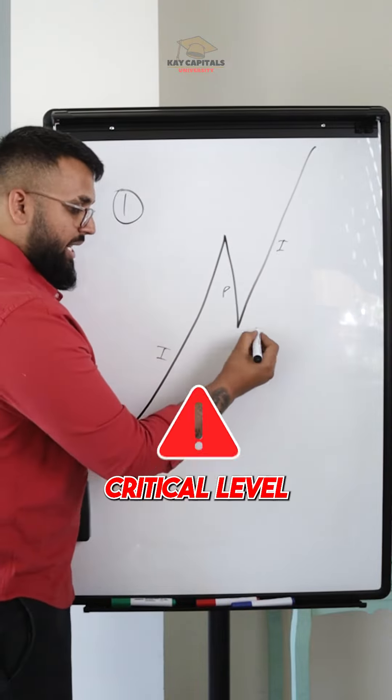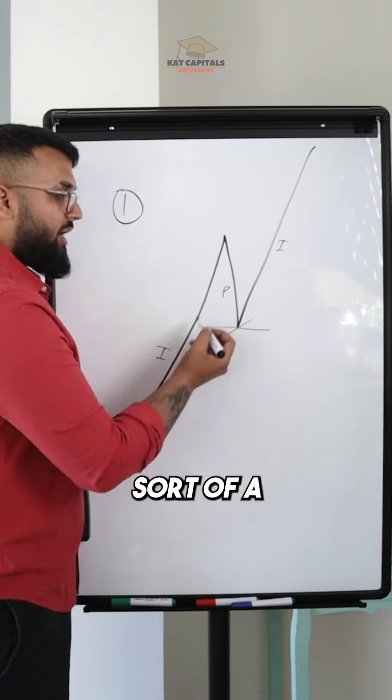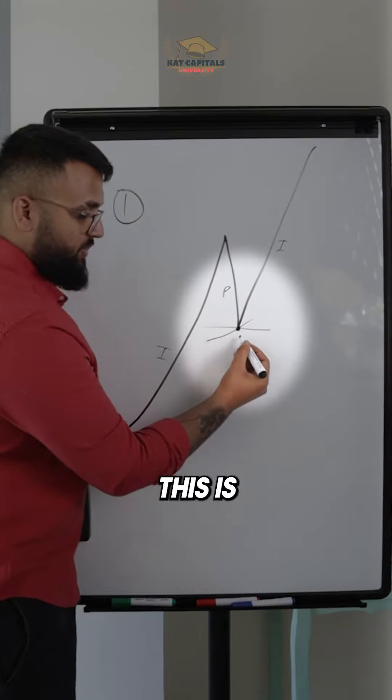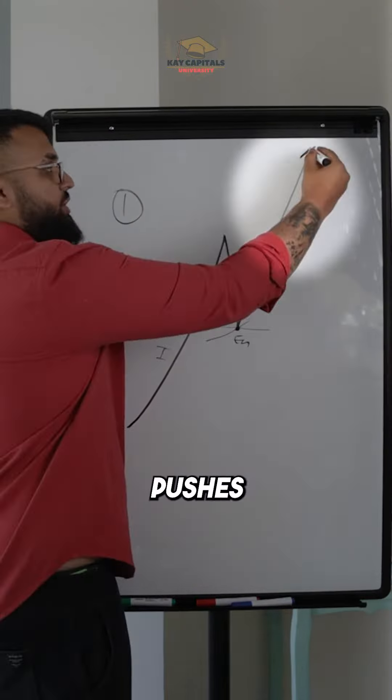It breaks out of a critical level with an impulse, pulls back to that critical level. This has become your entry point and it pushes higher.